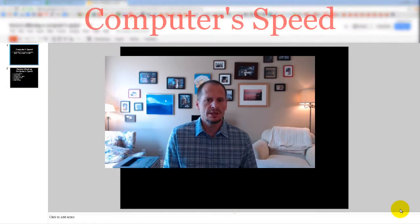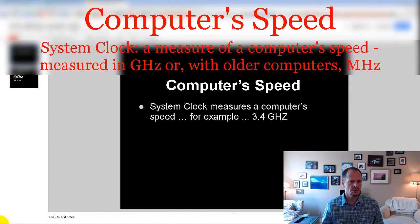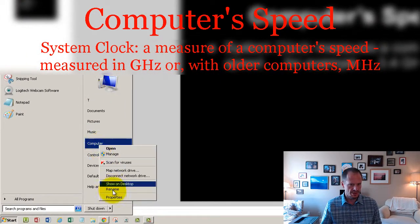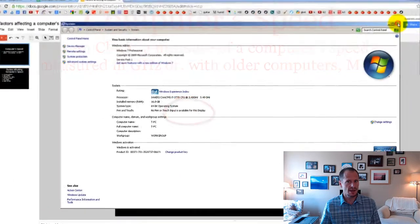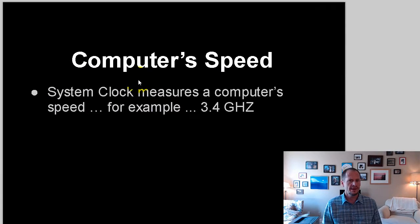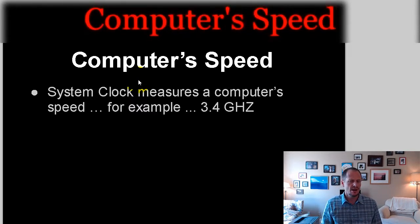Let's talk for a minute about computer speed. The system clock is the measurement of computer speed. Like we saw when we went to Start, clicked on My Computer, and chose Properties — we saw that the speed of this computer, if we were to say what's the speed, we'd say it's 3.4 GHz. And that's the measurement of the system clock. When we talk about computer speed, that's what we're looking for: the clock speed — 3.4 GHz. That's what people are referring to when they say how fast does your computer go, or how powerful is your computer — often it's just the clock speed, the system clock. For this computer, it'd be 3.4 GHz.